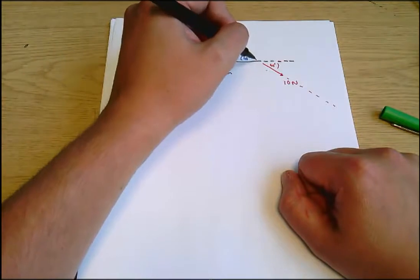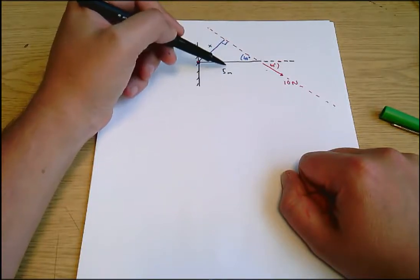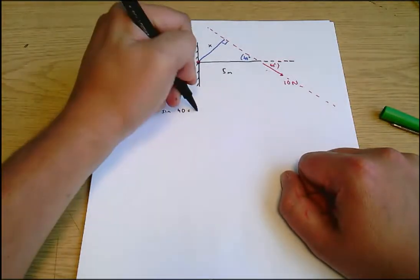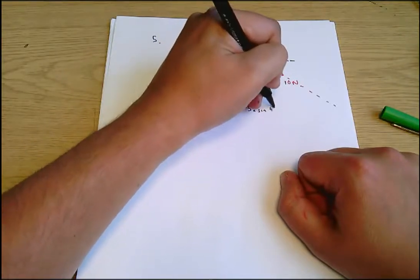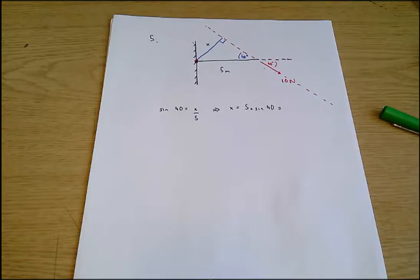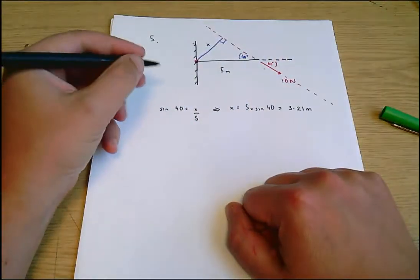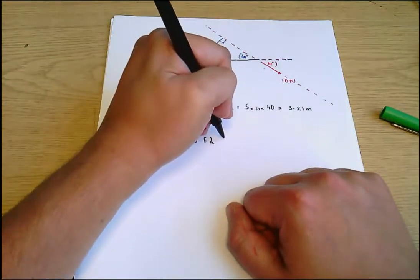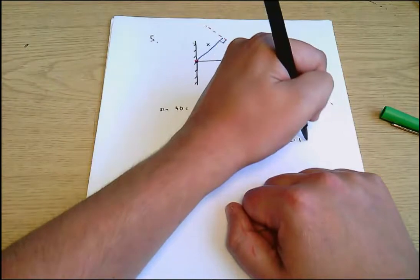I need to know the length of the lever arm x. I have a right-angled triangle where the hypotenuse is 5 — that's the side opposite the right angle — and the opposite side is x. So sine 40 equals x over 5, therefore x equals 5 times sine 40, which equals 3.2139 — I'll say 3.21 meters. Then: moment equals force times distance, which equals 10 times 3.21, which equals 32.1 newton meters.